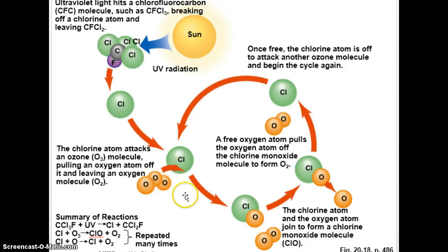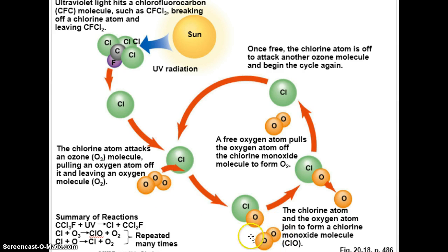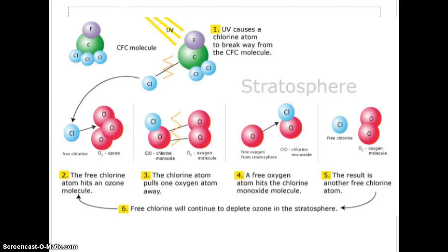When sunlight hits a CFC particle in the atmosphere, it breaks off a chlorine atom. That highly electronegative chlorine pulls an oxygen atom off ozone, leaving just regular O2 oxygen gas. While O2 is useful at ground level where we breathe, it doesn't protect us from UV rays up in the stratosphere. The chlorine then combines its oxygen with another oxygen atom, producing more O2 — not the protective O3 we need.